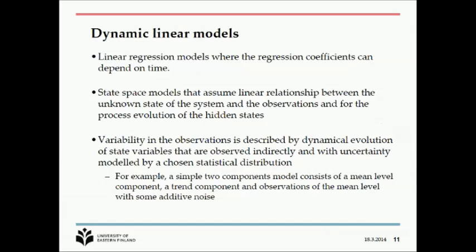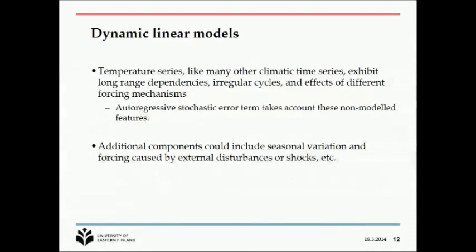The model is basically linear at each time point — it is linear regression where the regression coefficients can depend on time. At each point it is linear, but over the whole time series it might look nonlinear. These are so-called state-space models where there is some unknown state of the system, and the observations are images of that state. Temperature, like many other climate time series, can have longer dependencies, cycles, and flexibility — all of which can be taken into account with the same model. We could also add external components, such as shocks like volcanic eruptions.